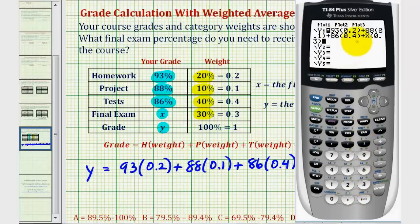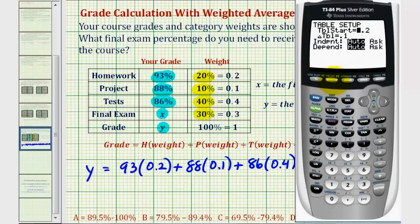So again, X will be the final exam percentage and Y will be the course percentage. So now we're going to use the table feature to answer this question. But before we do that, let's check our table set by pressing second window. Let's have the table start at 50. This would be a final exam score of 50%, and we'll have the change in table here be equal to 1 for 1%.